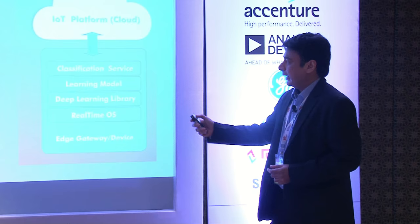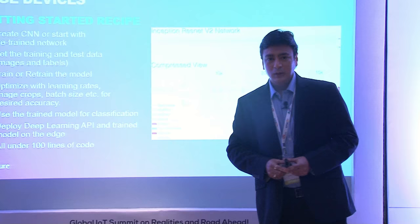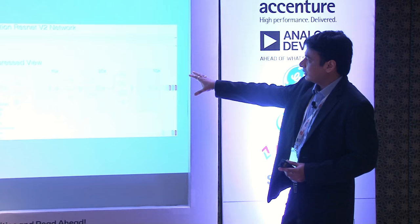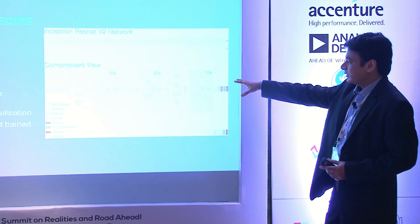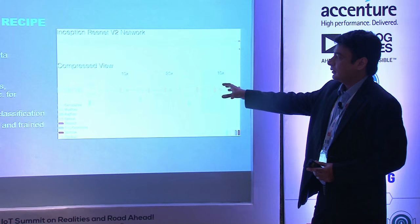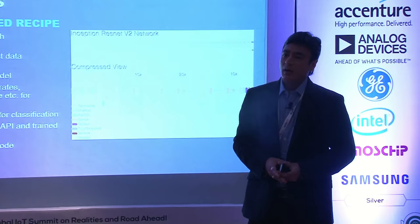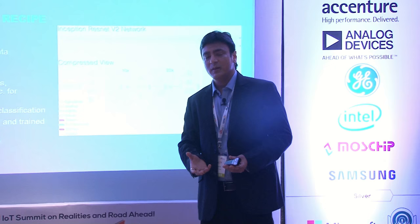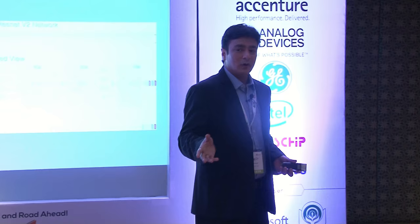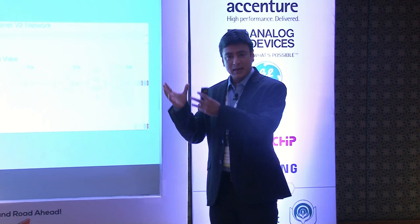To give you a 'get started' recipe: the inception model is a convolutional neural network — a series of neural networks — open-sourced and released by Google. You take this as a starting point, get your training and test data, which in this case would be images, for instance helmets, suspicious activity images, or cropland. You can do two things: either train the entire network, or use something called transfer learning where you start with just the last layer, put all your images and labels, and train the network.